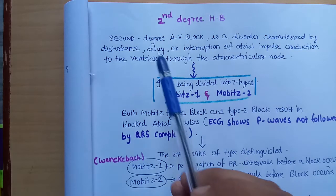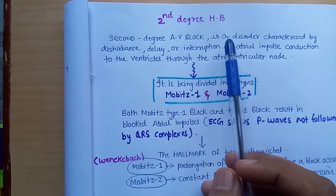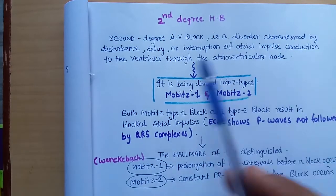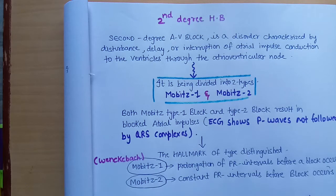So what is actually the second degree heart block? The second degree heart block, or the atrioventricular block, is a disorder characterized by the disturbance, delay, or any interruption of atrial impulse conduction to the ventricle through the atrioventricular node. If due to any pathology the AV bundle is disturbed or the AV node is not working well, we might have a heart block.